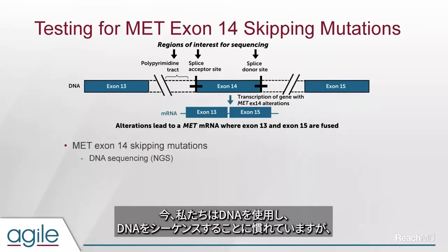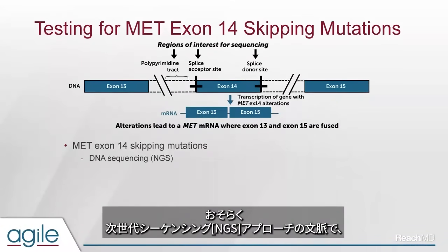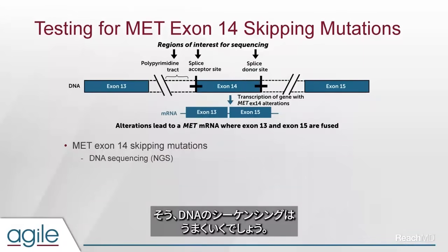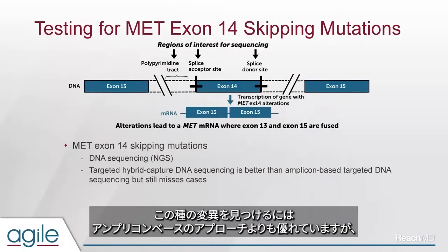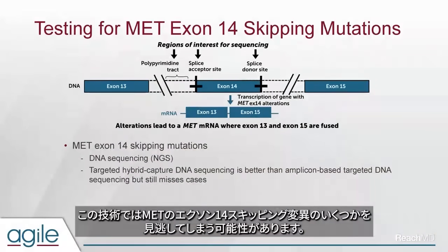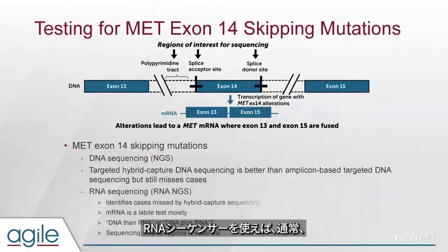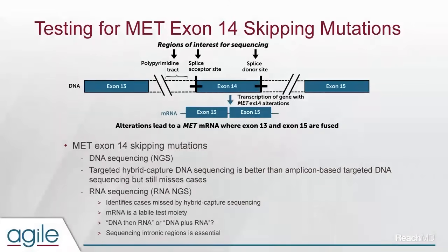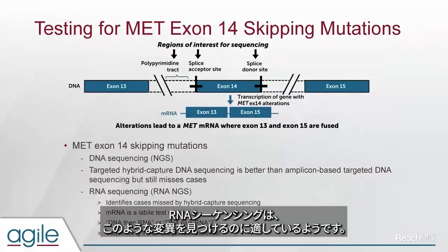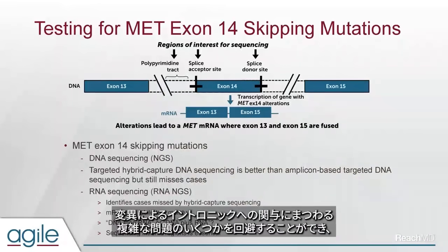The unusual location and size of these mutations does lead to some problems with testing and identification. We're all used to using DNA sequencing, most likely in the context of a next-generation sequencing approach, and yes, sequencing DNA will work. The hybrid capture type approaches of DNA sequencing are better than amplicon-based approaches for finding this kind of mutation. But this technology will miss some MET exon-14 skipping mutations.